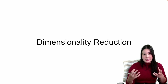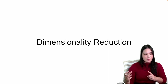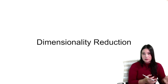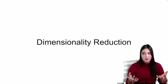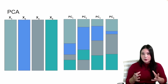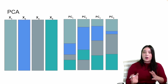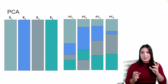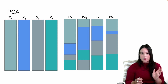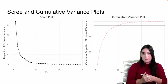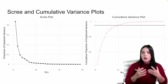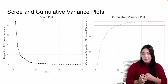You might notice that when we create principal components, we end up with the same number of principal components as original features — however many columns go in, that many principal components come out. But PCA does do dimensionality reduction because the principal components are ordered: the first explains the most information in the original data, the second explains the second most, the third the third most, and so on. This means we can drop the last few principal components and still retain most of the original information.